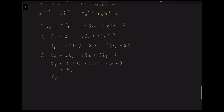For S₅, we let n=2 and rewrite the equation in terms of S₅. Substituting S₄=98, S₃=20, and S₂=14, we rearrange to get S₅ = 212.